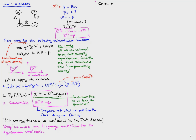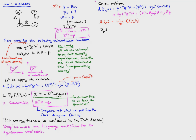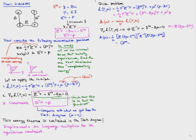Now we construct the dual problem. We start with the Lagrangian, which we rewrite by collecting the quadratic and linear terms in F and then the term that does not contain F. The dual objective function K of mu is the minimum over F of the Lagrangian. To find the minimum, we take the gradient, set it equal to zero, and solve to get F equals E times (B mu minus delta thermal). We substitute this into K of mu and collect terms.